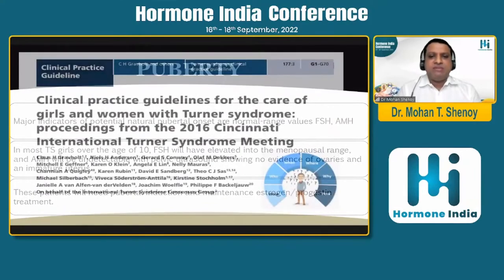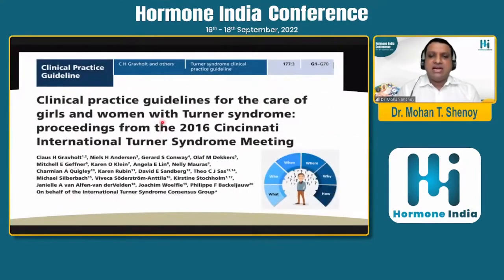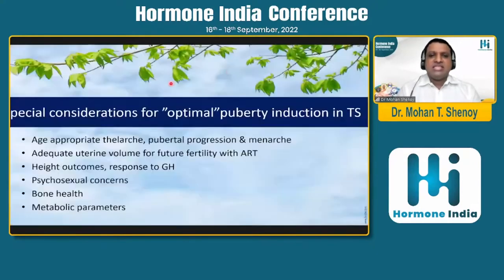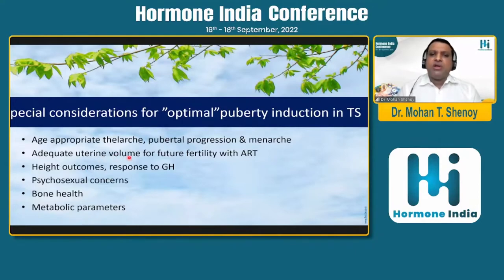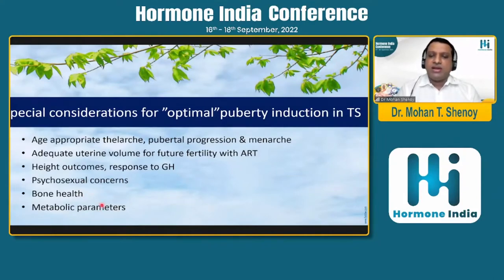The guidelines for this talk have been taken from the Cincinnati International Turner Syndrome meeting of 2016 — a very large publication describing the Turner syndrome clinical practice guidelines. Considerations for optimum puberty are: to provide age-appropriate thelarche or breast growth, near-normal pubertal progression and menarche, adequate uterine volume for future fertility with assisted reproductive techniques, and proper height outcomes responsive to growth hormone therapy. The three other very important things are psychosocial development, bone health, and metabolic parameters.